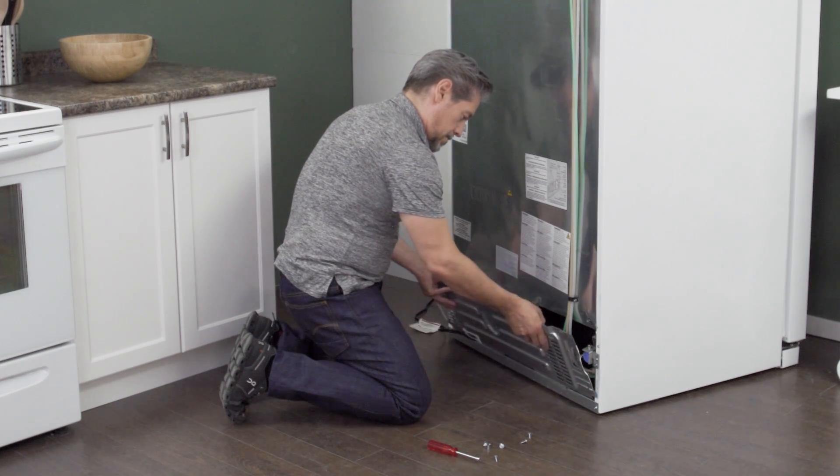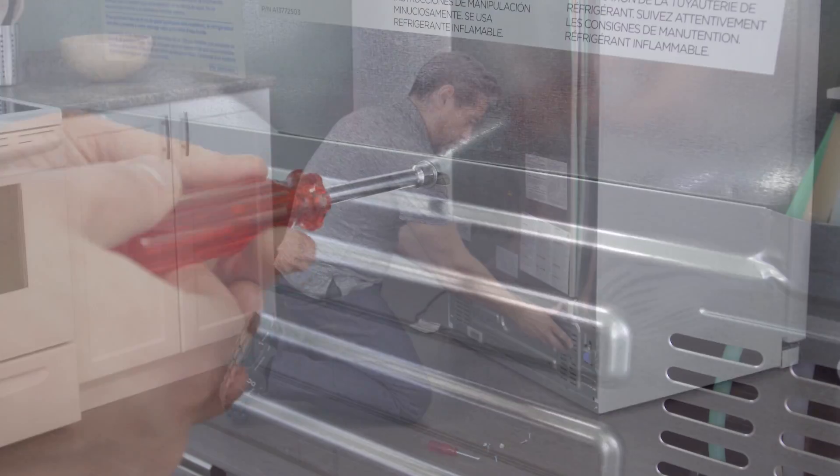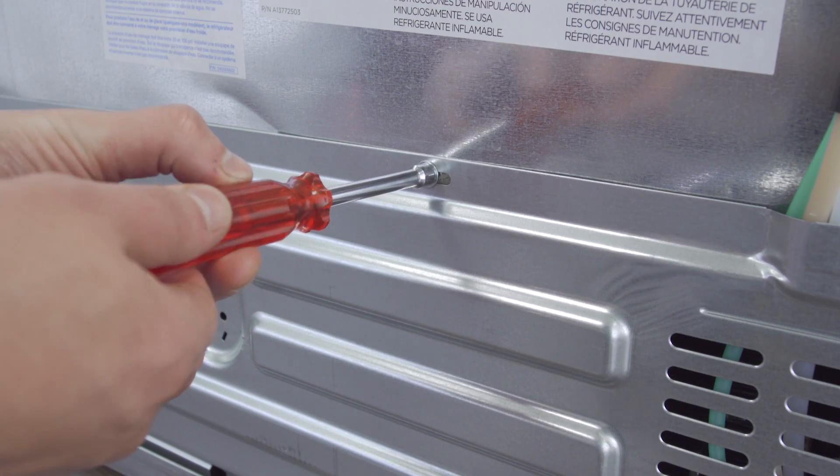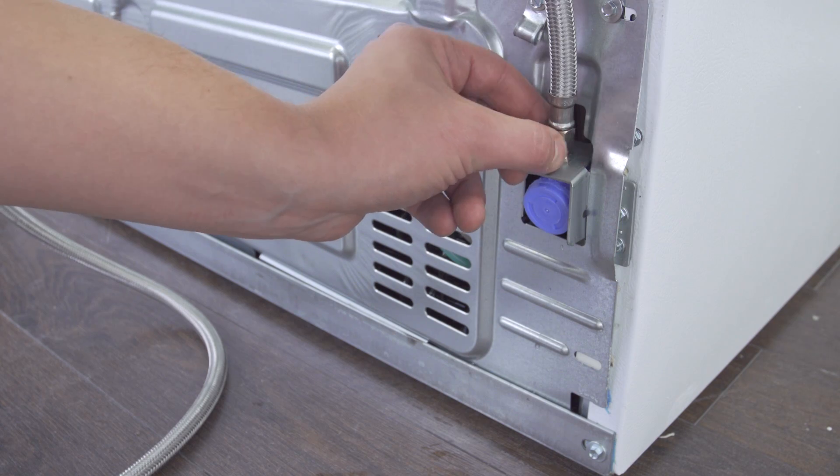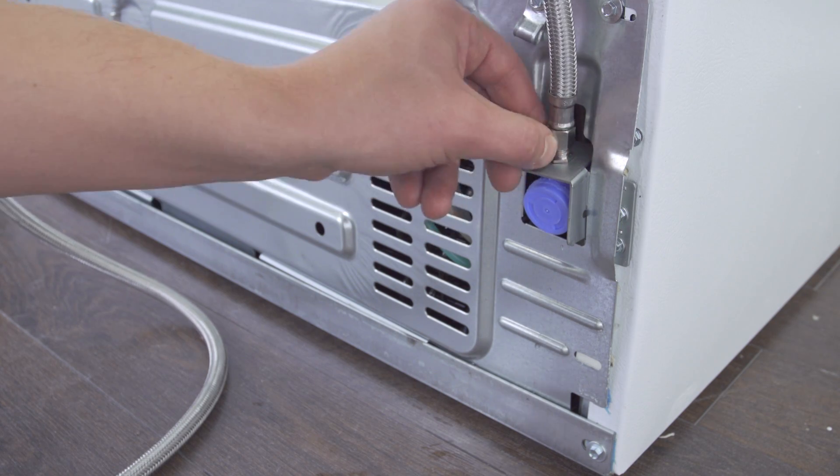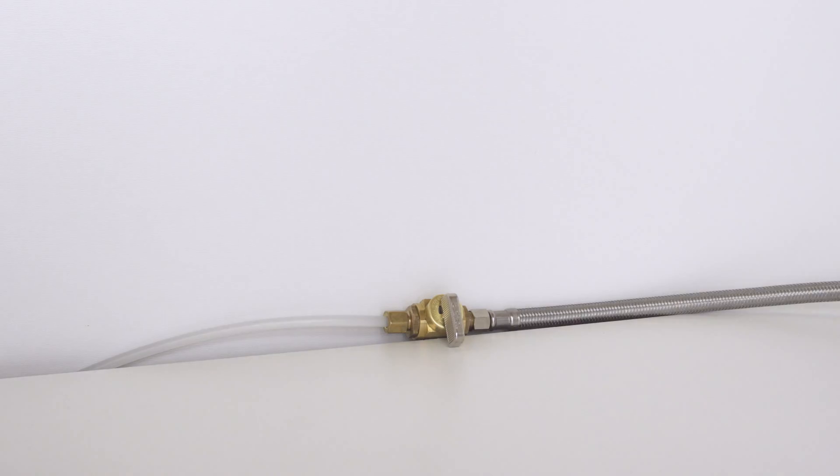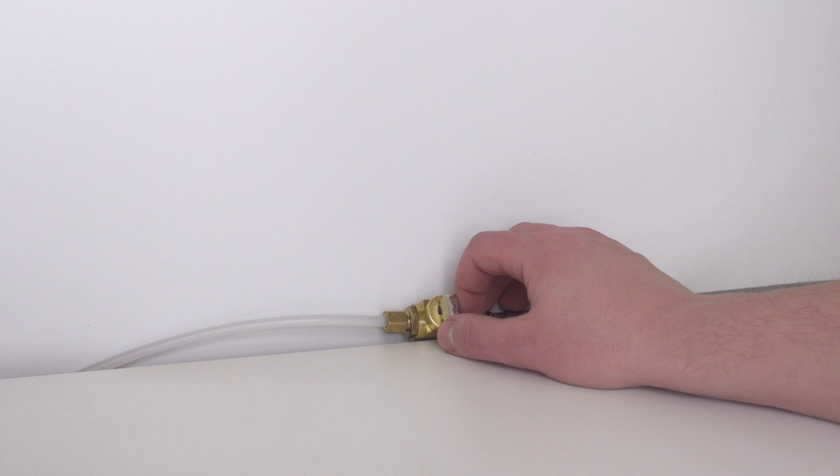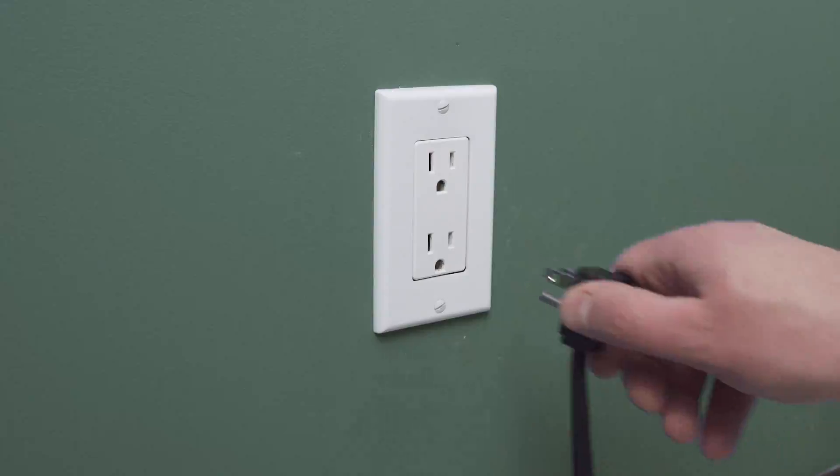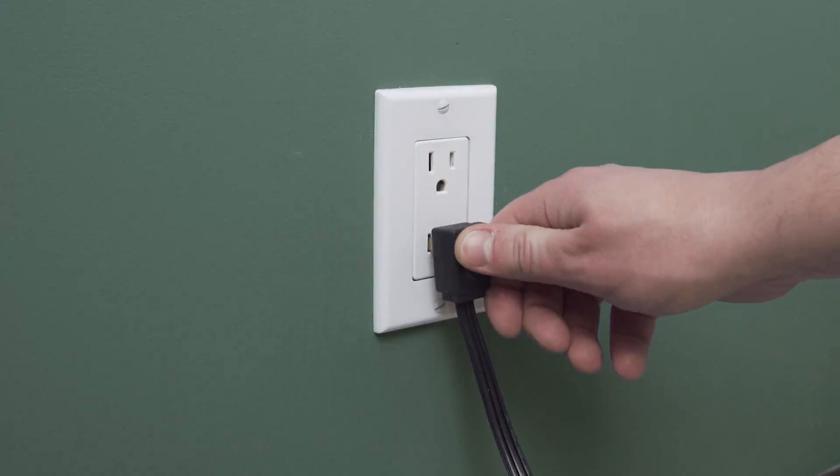Align the back panel onto the mounting tabs. Now tighten the screws. Reconnect the water supply and tighten the connection. Open the shutoff valve. Plug in the cord to reconnect the power.